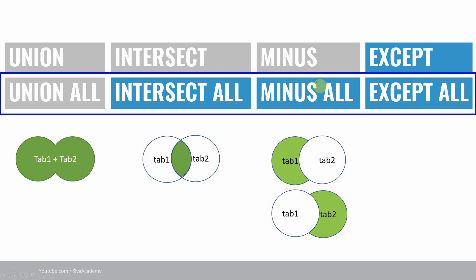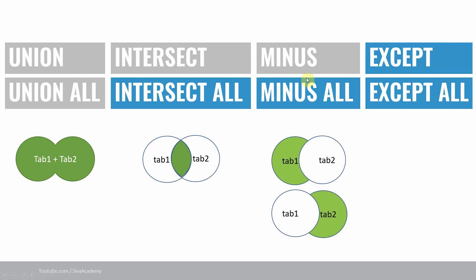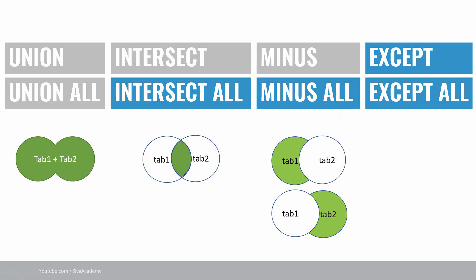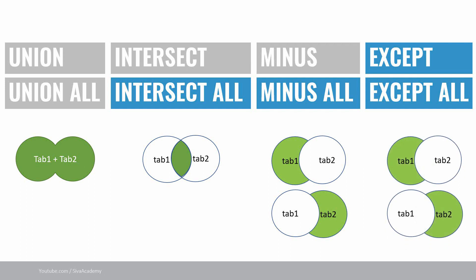Now let's come back to the new keywords introduced from Oracle 21c. Intersect all is exactly similar to intersect — the only difference is intersect will remove duplicates if any, however intersect all will not. Similarly, the only difference between minus and minus all is that minus all will consider duplicate values, however minus will not. The except and except all are functionally exactly the same as minus and minus all.